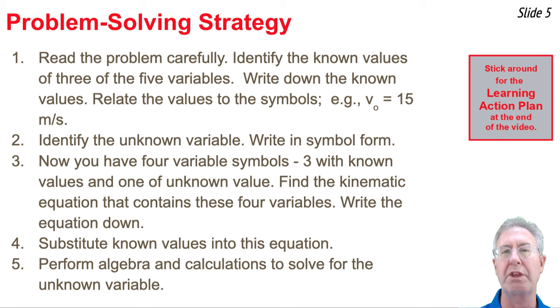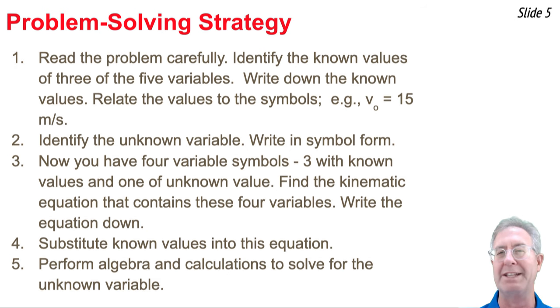Maybe you say d equal question mark. Now that you have four variable symbols, three with known values and one with unknown values, you're going to look for a kinematic equation that contains those four variables. Once you find it, you write it down. Then you take the three known values and you substitute it into this equation. And then finally, you perform some algebra in order to solve for the unknown value of the unknown variable. Sounds easy. Let's give it a try.